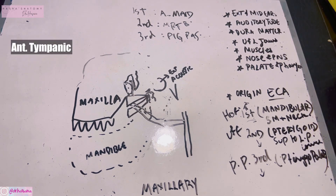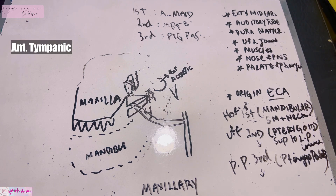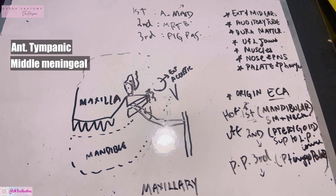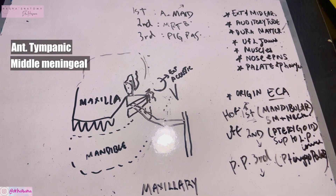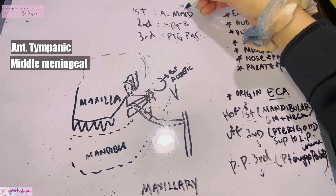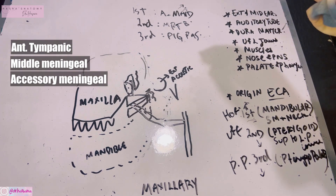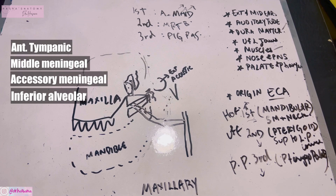From the first part — A-MADE: A is for the anterior tympanic branch, which supplies the tympanic membrane. MM stands for the middle meningeal artery, which passes through the foramen spinosum into the cranial fossa and supplies the dura mater. The next A is for the accessory meningeal artery, which goes through the foramen ovale and supplies structures of the infratemporal region.